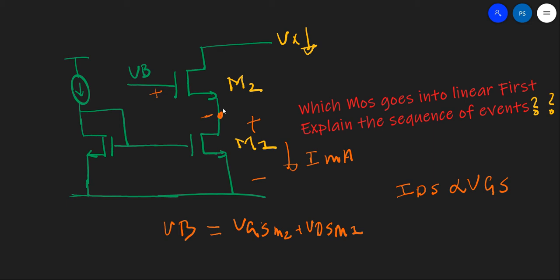Now because this node is not moving and because the drain is going down, the VDS is reducing. And at one particular point when the VDS of this is lesser than the overdrive voltage, this MOS will first go into saturation. So this is the answer: the M2 will go into saturation.